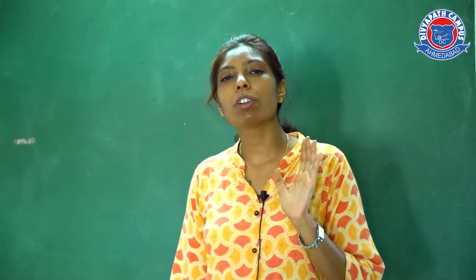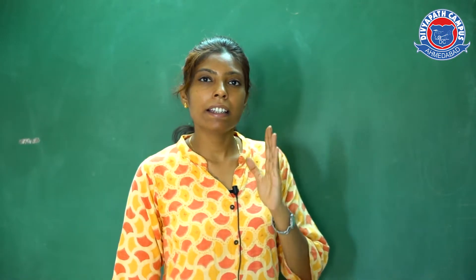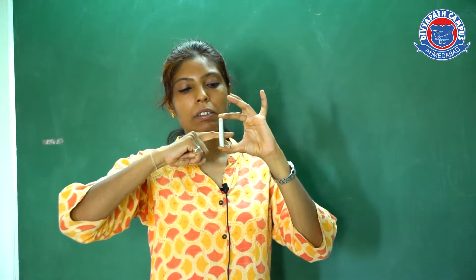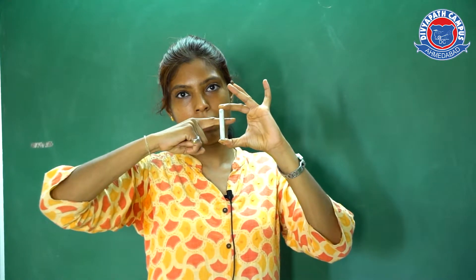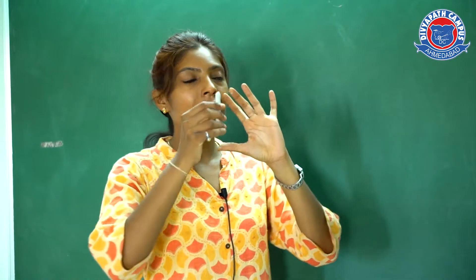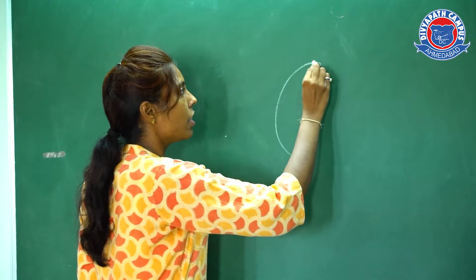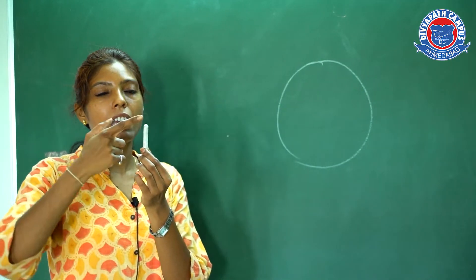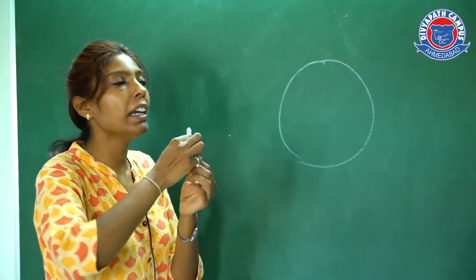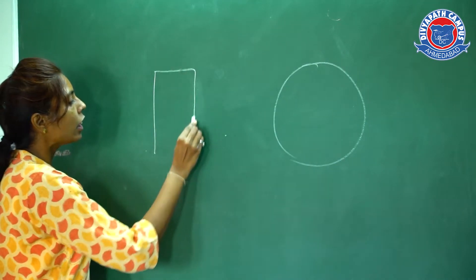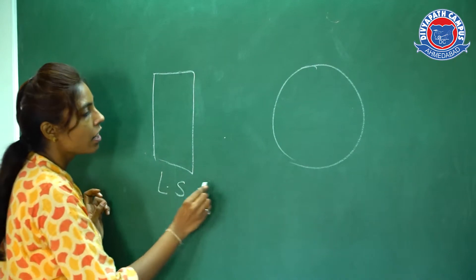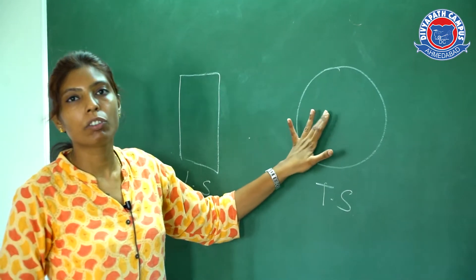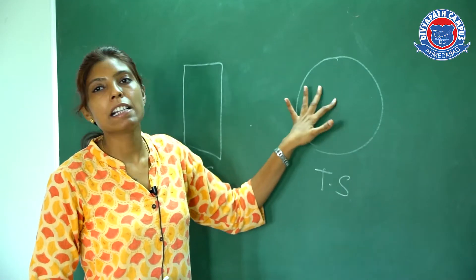If we start with a root and stem, we have to cut the transverse section. It means we have to cut the stem or root like this and you will find a circular structure — this is your transverse section (TS). And if I am cutting this stem or root longitudinally, then this is the LS, that is longitudinal section. We have to study the transverse section of a root or stem and then the cells present in it.